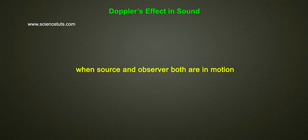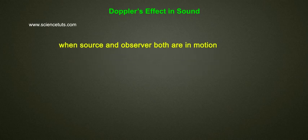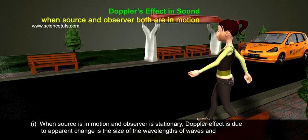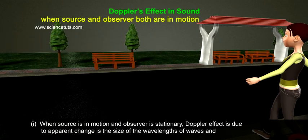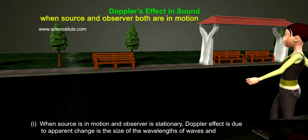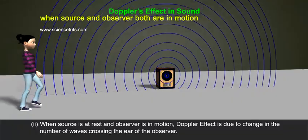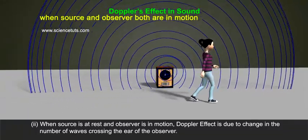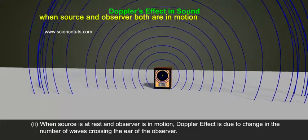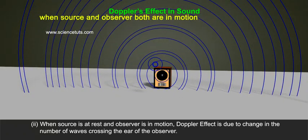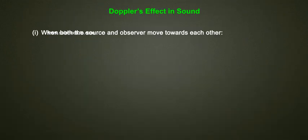When source and observer both are in motion, from the above discussion it follows that: (1) when the source is in motion and observer is stationary, the Doppler effect is due to an apparent change in the size of the wavelengths of waves; and (2) when the source is at rest and observer is in motion, the Doppler effect is due to a change in the number of waves crossing the ear of the observer.